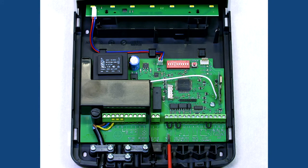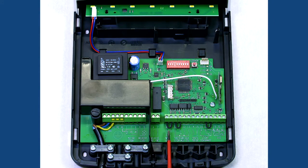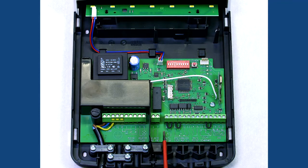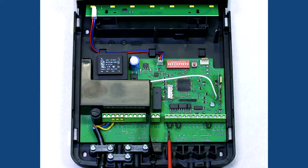Terminals eight and nine currently have a link in them which needs to be removed. Remove the link and replace it with brown into eight and blue into nine. This is for the safety brake.